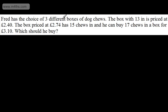Fred has the choice of three different boxes of dog chews. The box with 13 in is priced £2.40. The box priced at £2.74 has 15 chews in. And he can buy 17 chews in a box for £3.10. Which should he buy? So we're going to assume he wants to save as much as possible. And we're going to work these out. This one is worded slightly differently. So all I'm going to do is look at the three boxes. I'm going to have the 13 box. I'm going to have the 15 box. And I'm going to have now the 17 box.